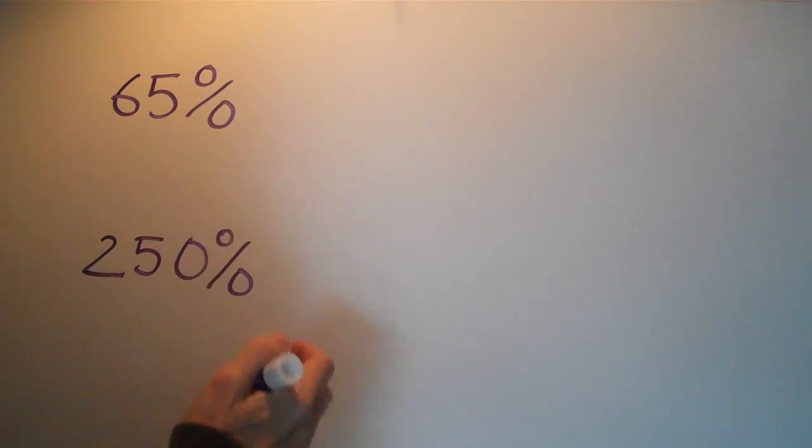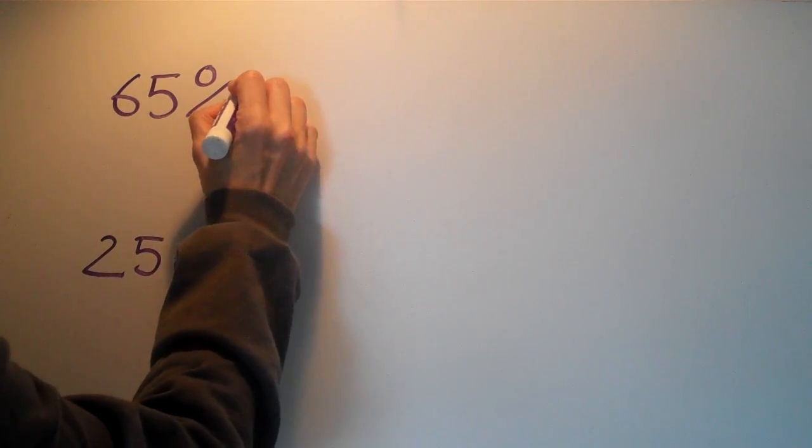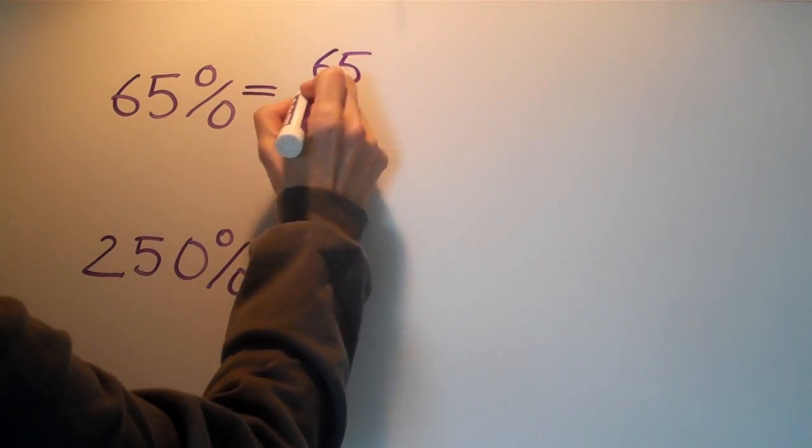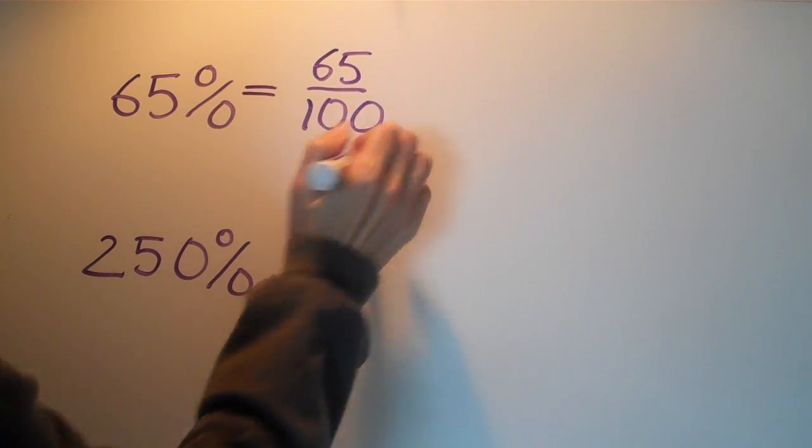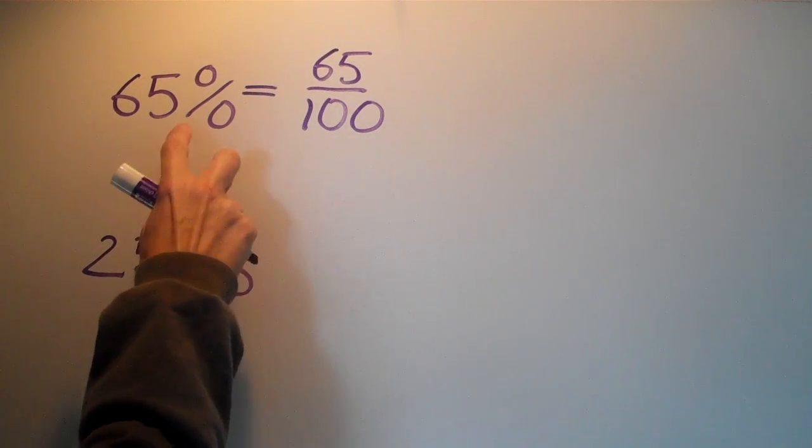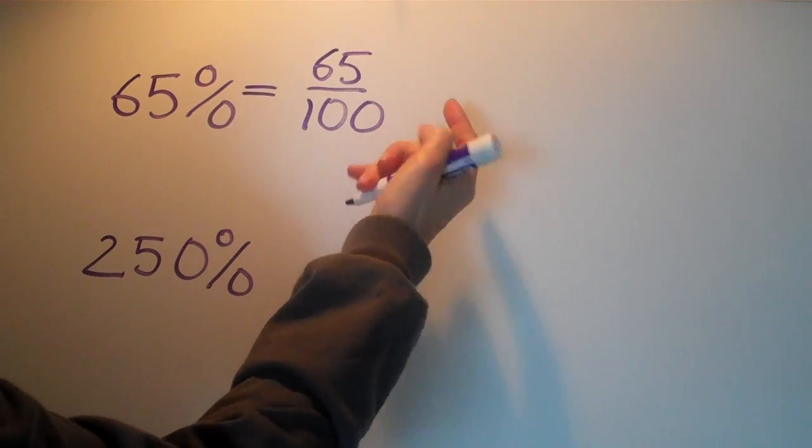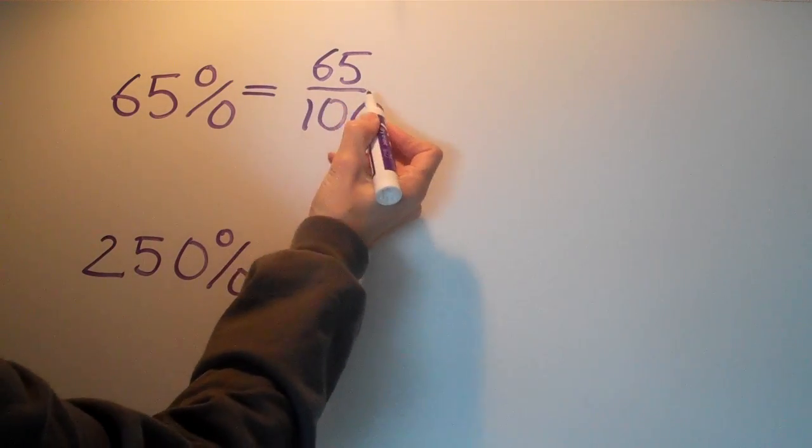So if we were going to write this out the long way it would be 65 over 100. These are two equivalent numbers - 65% meaning 65 per 100.